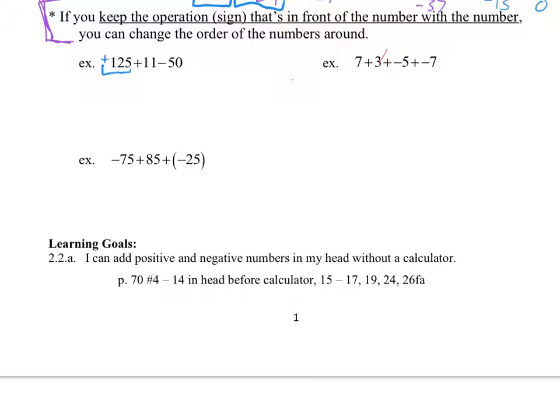My second thing here then is I have this positive 11, so plus 11, and I have a minus 50. We could go through and combine those in order. So say 125 plus 11 is 136. 136 minus 50 is 86. So you get the answer, it's 86.